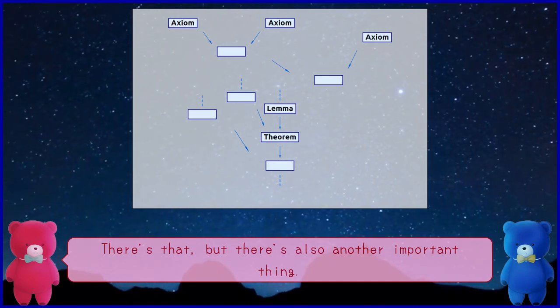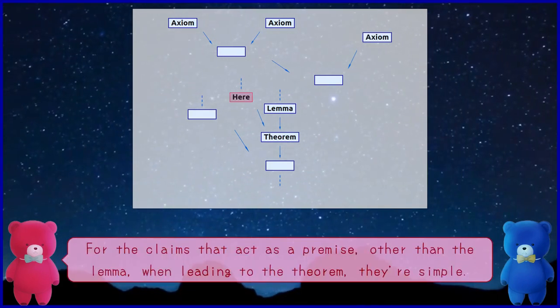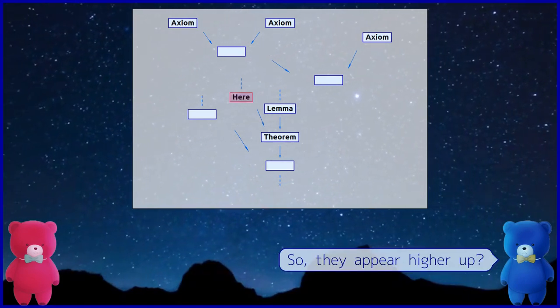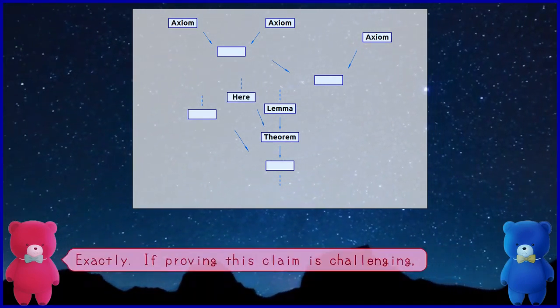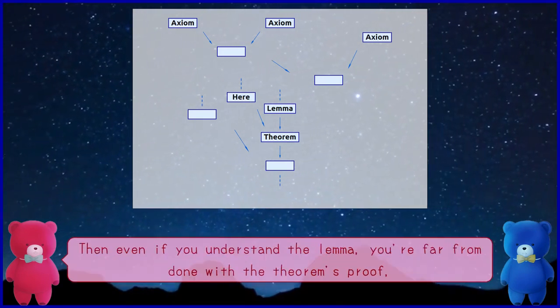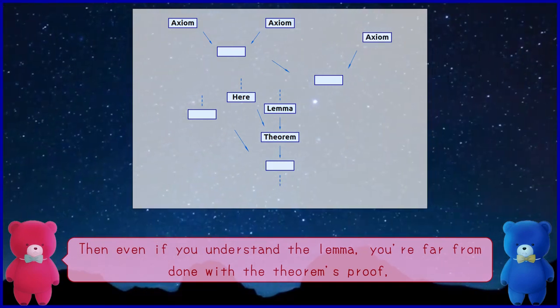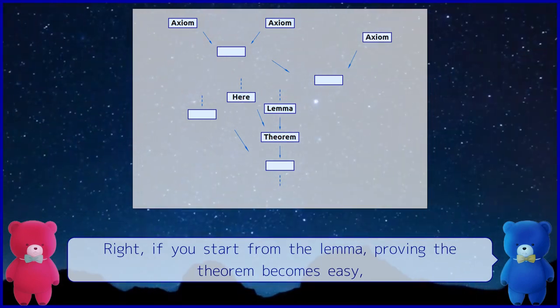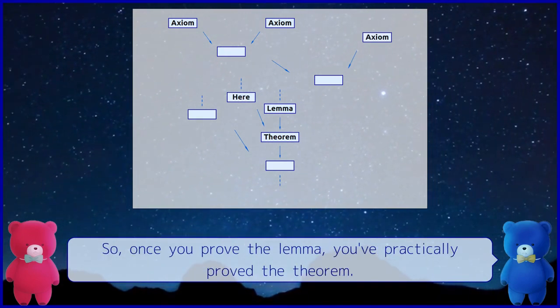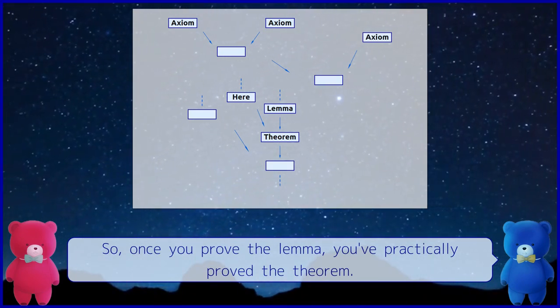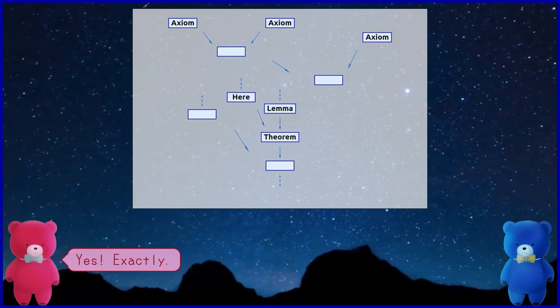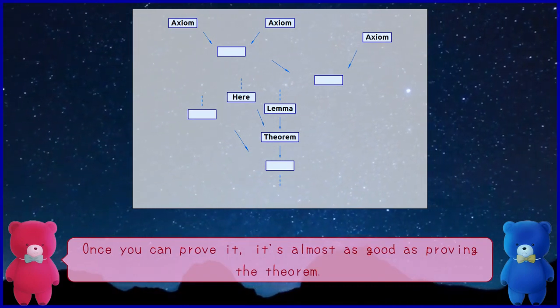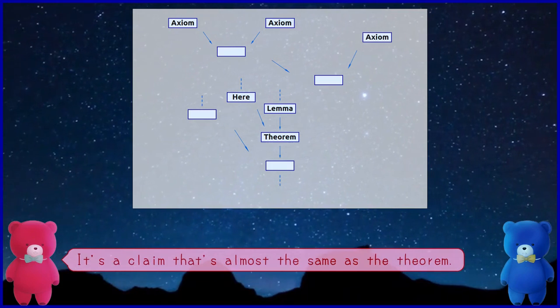So you mean the lemma is positioned just a little above the theorem? There's that, but there is also another important thing. What is it? For the claims that act as a premise, other than the lemma, when leading to the theorem, they are simple. So they appear higher up. Exactly. If proving this claim is challenging, then even if you understand the lemma, you're far from done with the theorem's proof because you still have to prove this challenging claim. Right. If you start from the lemma, proving the theorem becomes easy. So once you prove the lemma, you've practically proved the theorem. Yes, exactly. The image of a lemma is as you've just described. Once you can prove it, it's almost as good as proving the theorem. It's a claim that's almost the same as the theorem.